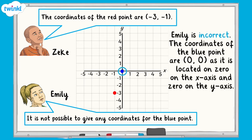Emily is also incorrect, as the coordinates of the blue point are 0, 0, as it is located on 0 on the x-axis and 0 on the y-axis. When describing coordinates, we call this point on a coordinates grid the origin. Thanks for watching. For more maths support, check out our other maths concept videos available on the Twinkl website.